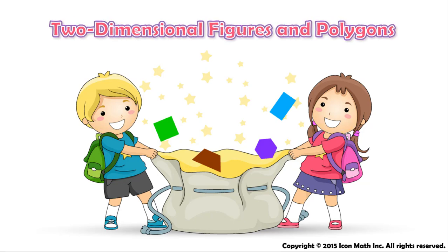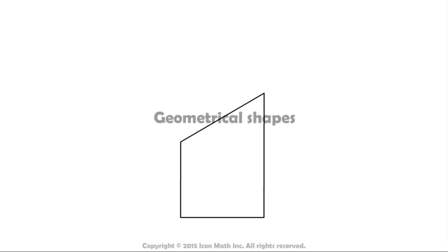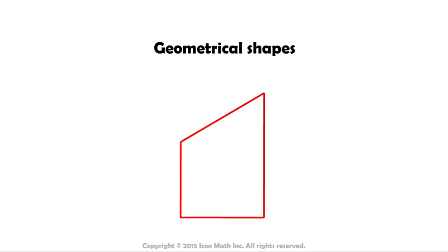Two-dimensional figures and polygons. Geometrical shapes have many properties. Some of these are familiar to us, such as the length of the sides or the angles within the shape.